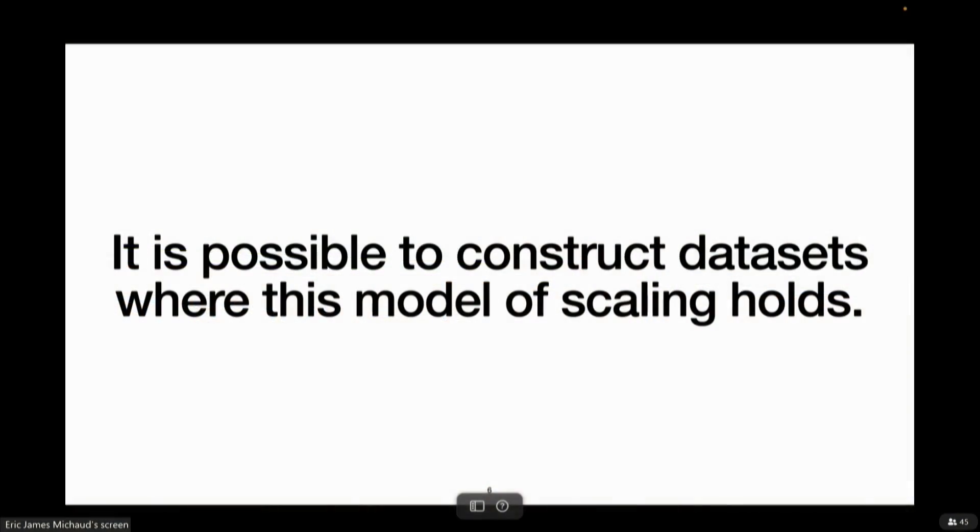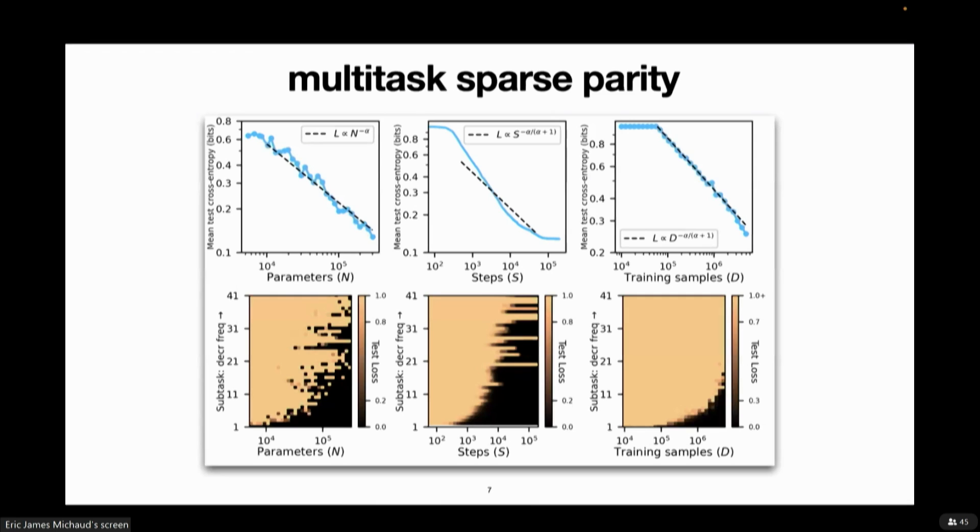So, that's the model. I'll show that it is possible to construct data sets where this model of scaling is true. So I don't really describe exactly what we did, you can check out the paper for this, but basically we just describe this binary classification problem on binary strings, where there are a bunch of subsets of the data, where doing prediction on each of those subsets requires different features to be learned by the network. And then when we impose this power law distribution over how frequently samples are seen in the data from each of these subsets, we get power law scaling in the mean loss, but this power law is averaging over a large number of these discrete transitions as the network learns how to do prediction well on subsets of the data. Basically larger networks learn how to do prediction well on more and more of these subsets of the data. And so we see indeed that the smooth power laws on top average over a large number of these discrete changes, which you can see on the bottom.